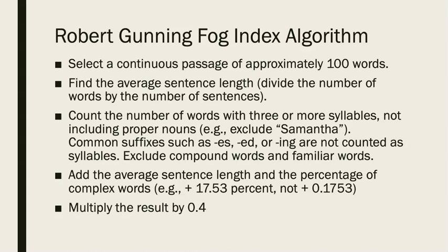Then we average the sentence length and the percentage of complex words — that is, we take these numbers and add them directly. We multiply the result by 0.4, and that gives us our Robert Gunning Fog Index.